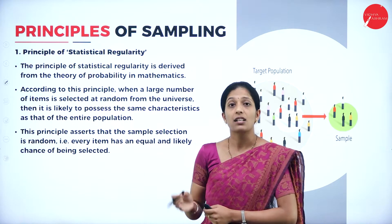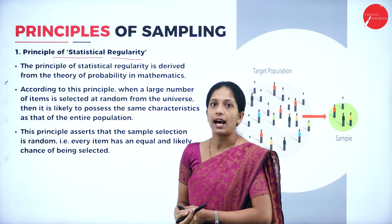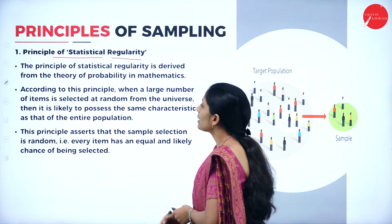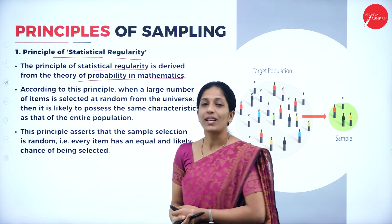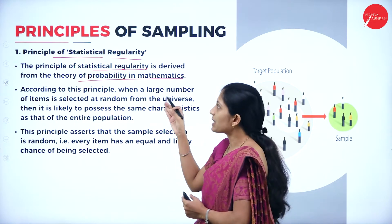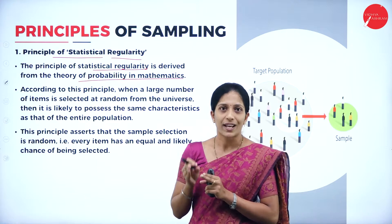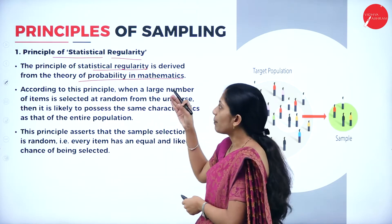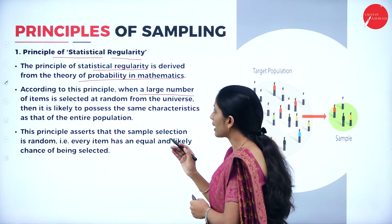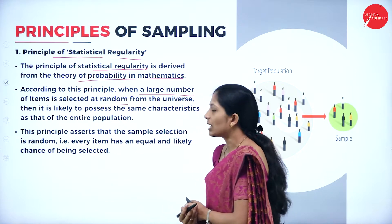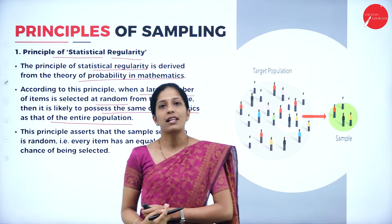There are two main principles of sampling. The first one is the principle of statistical regularity. This principle is derived from the theory of probability in mathematics. According to this principle, when a large number of items are selected at random from the universe, they are likely to possess the same characteristics as that of the entire population.